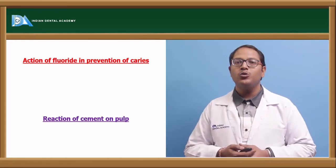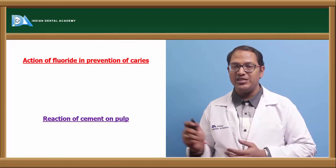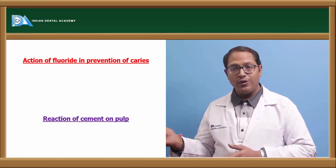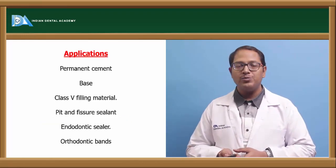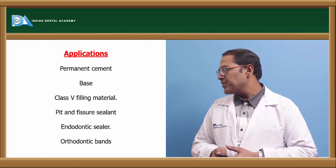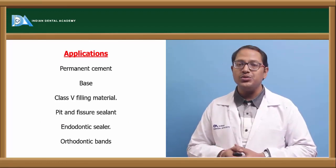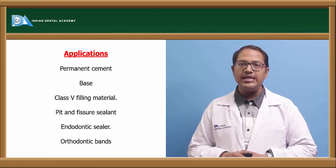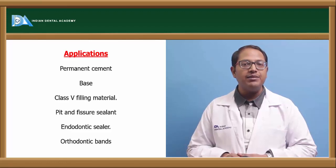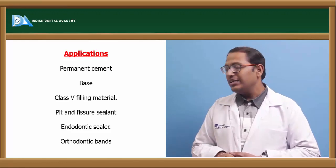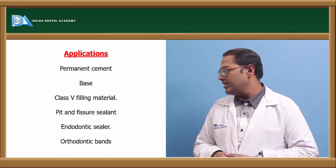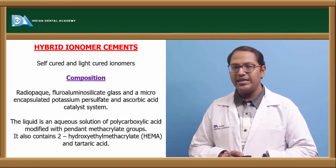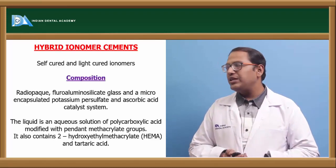Despite high solubility and initial acidic pulp reaction, GIC is widely used as a luting cement because of its high compressive strength and fluoride release preventing secondary caries. It is used as a permanent cement, base, filling material for Class 5 cavities, pit and fissure sealant, endodontic sealer, and for luting orthodontic braces.